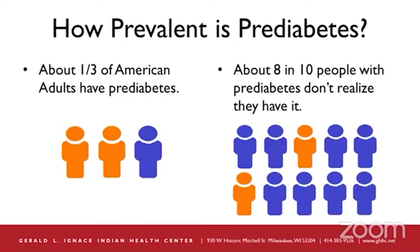So how prevalent is prediabetes? About one third of the American adult population actually have prediabetes. About eight in ten people with prediabetes don't realize they have it because there's often no associated symptoms. So it's important to get screened for prediabetes.